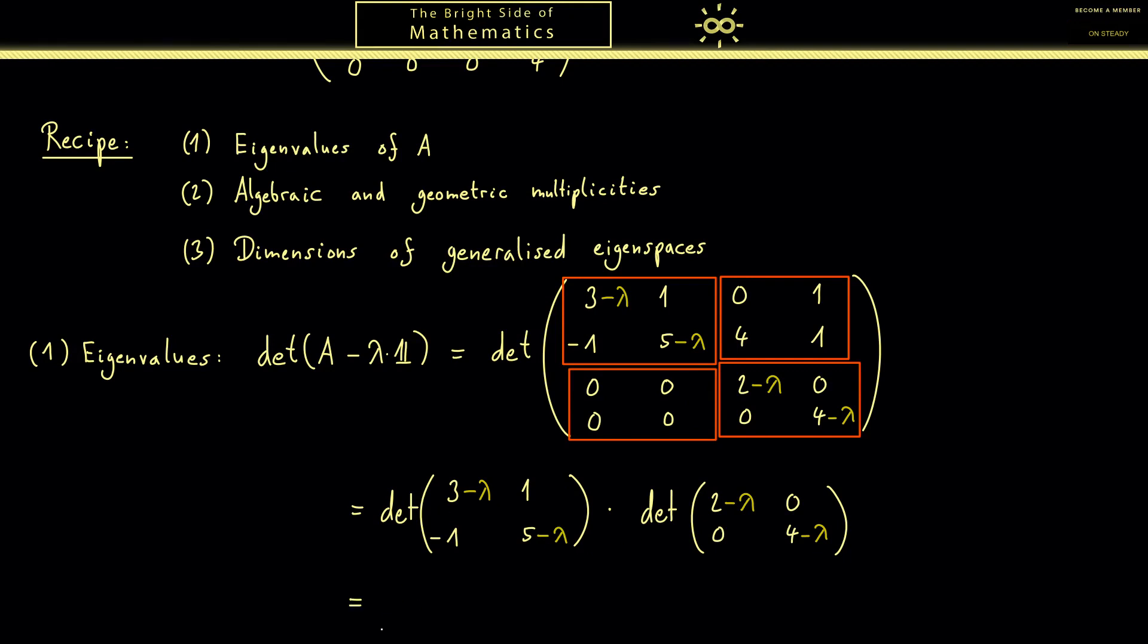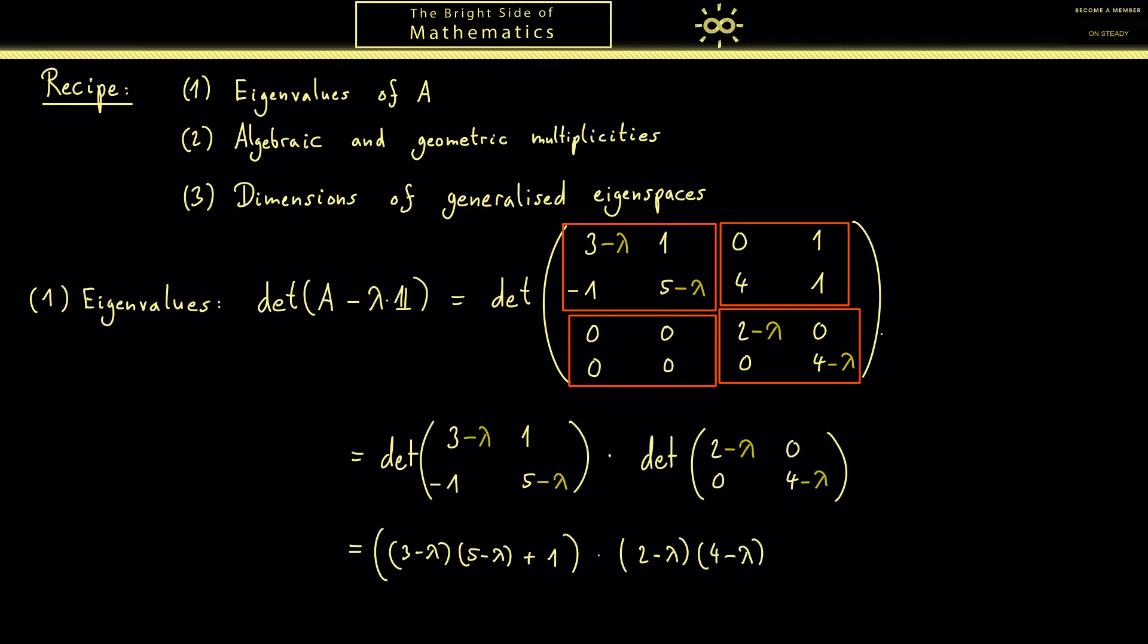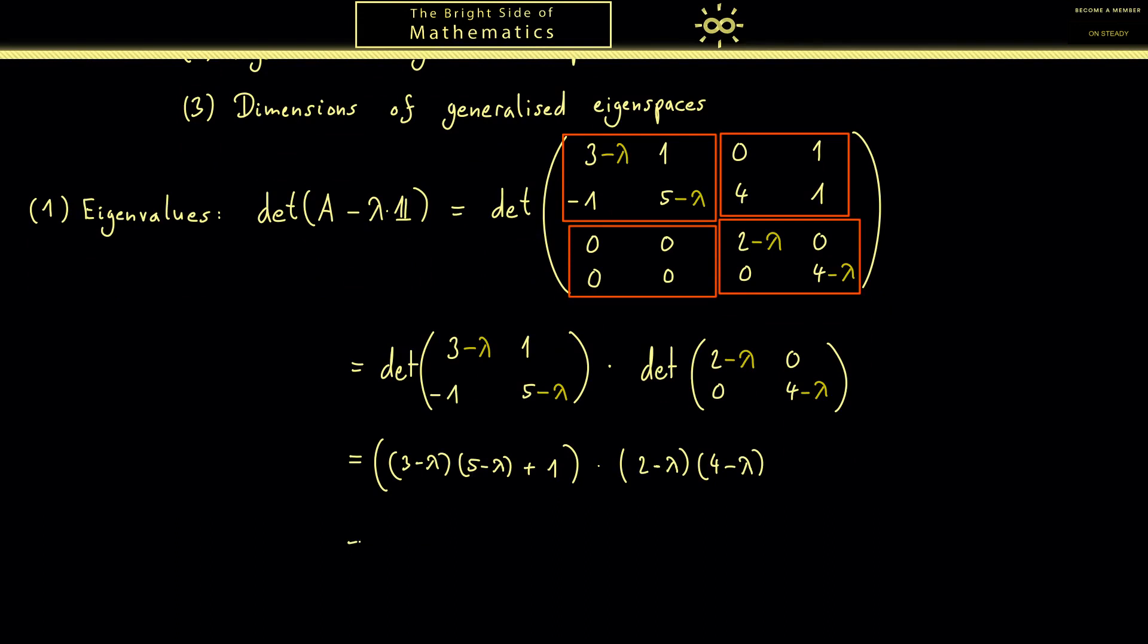Working with 2 times 2 determinants is not so hard. Here we can just multiply the diagonal and then we subtract the off diagonal, which is in this case plus 1, and the same here, which means we just have the diagonal multiplied. In the next step let's expand this first term here. We have here 15 plus 1, so this would be 16. We have 3 and minus lambda, we have 5 and minus lambda, so in the sum minus 8 lambda and just lambda squared here. At this point we already know that 2 and 4 are zeros of the characteristic polynomial.